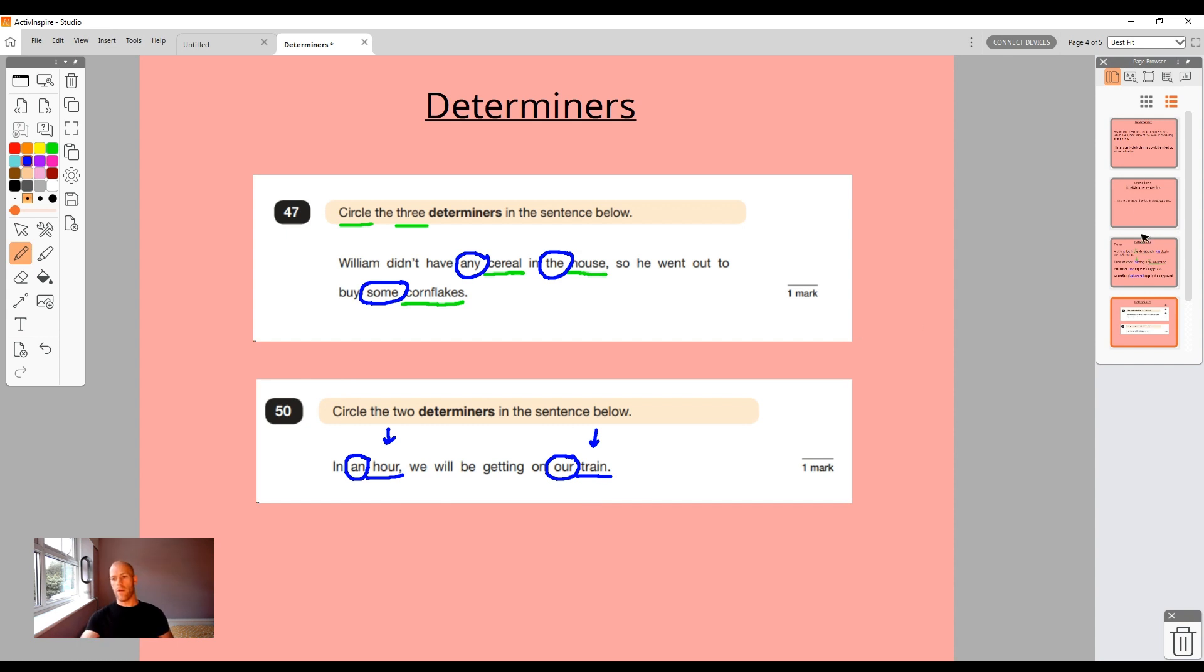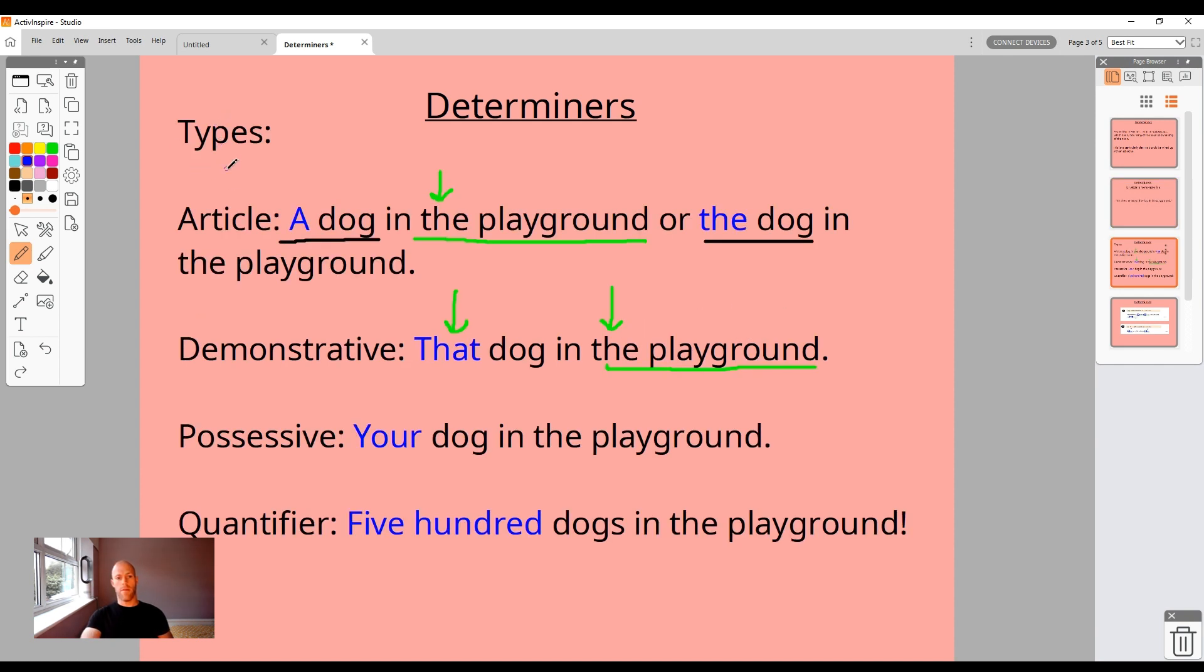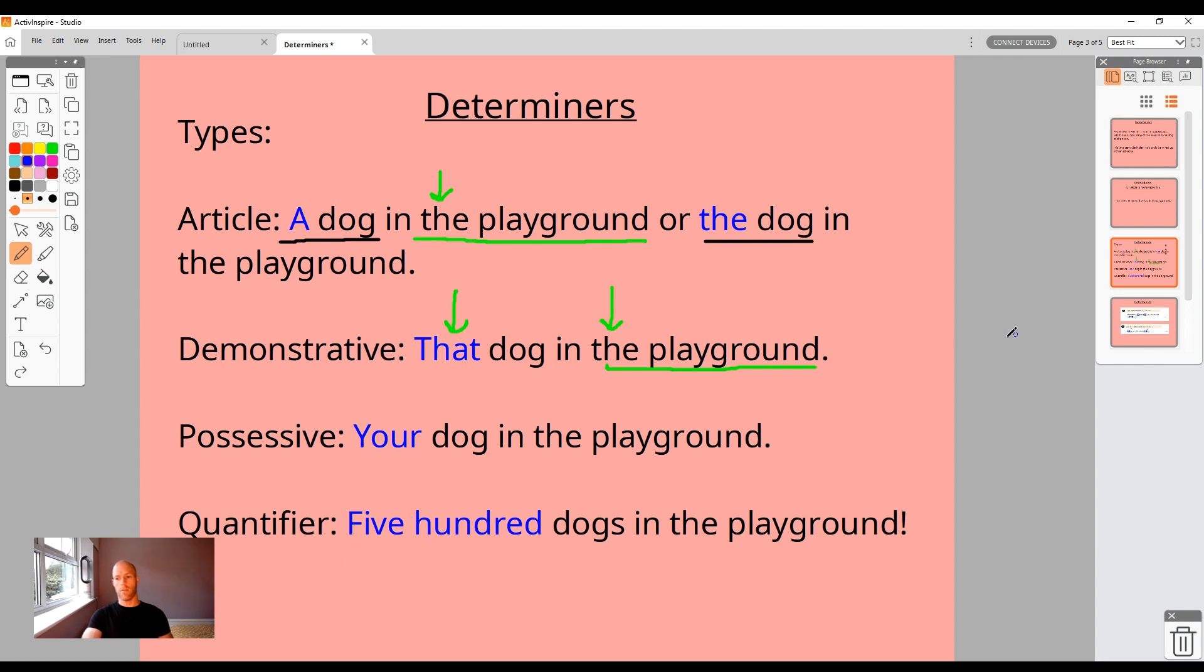Hopefully that's explaining what a determiner is. Hopefully whenever you need to remember a determiner, you will say 'oh yeah, that's Mr. Biddall's when he talks about the dog in the playground and how it changes.' Go through them all again very briefly: you can have an article, which is a dog in the playground or the dog in the playground. Demonstrative, where you're demonstrating - that dog or this dog is in the playground. Possessive type of determiner is your dog, their dog, his dog, her dog is in the playground. And a quantifier is talking about the quantity - 500 dogs in the playground. All very exciting stuff.